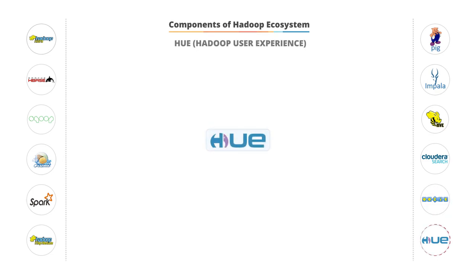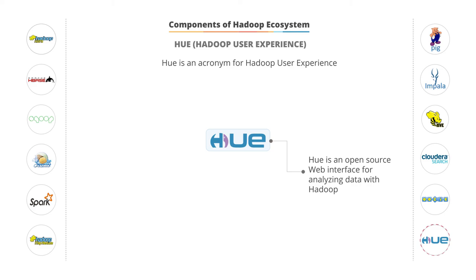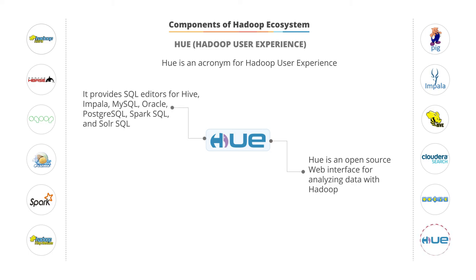Hue. Another component in the Hadoop ecosystem is Hue, which is an acronym for the Hadoop User Experience. It is an open-source web interface for Hadoop. Hue makes Hadoop much easier to use. It also provides a SQL editor for Hive, a SQL editor for Impala, MySQL, Oracle, PostgreSQL, SparkSQL, and SolarSQL. We will be learning more about Hue in our future lessons.